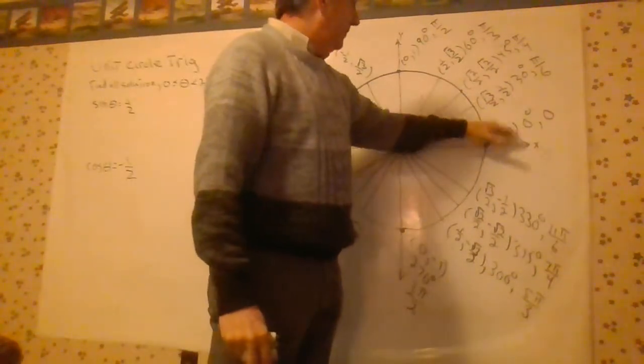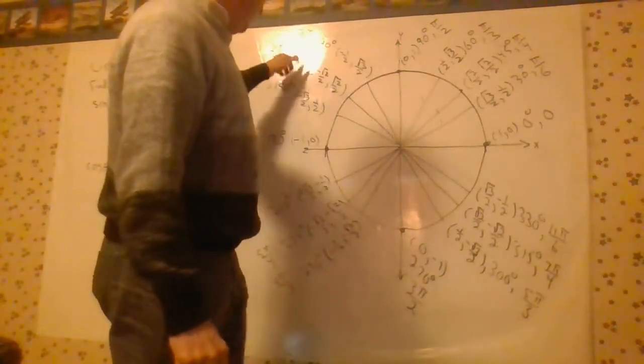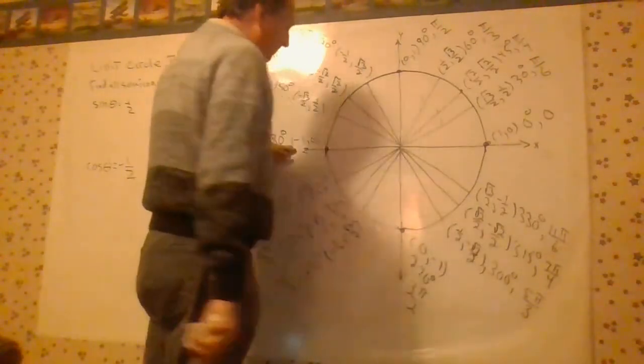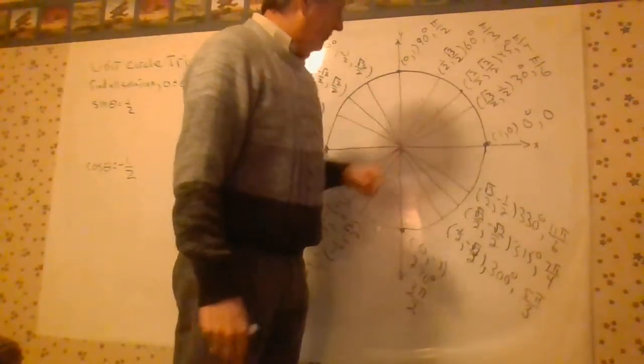theta equals 0, then 30 degrees, 45, 60, 90, 120, 135, 150, then 180. This is a straight angle. All the way down here at 270 and then back to 0.